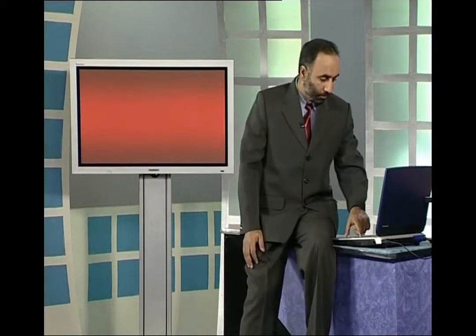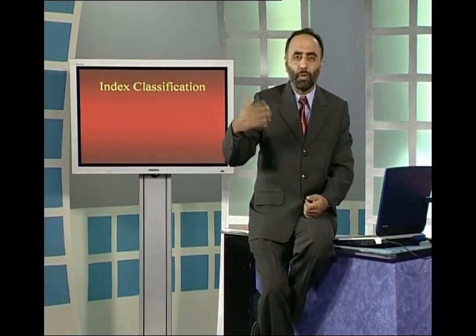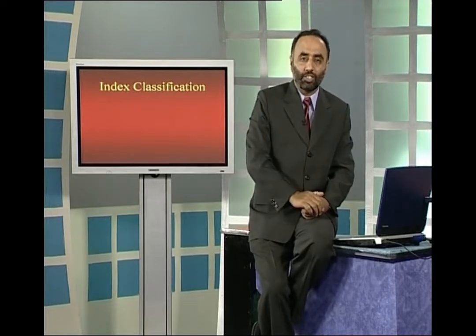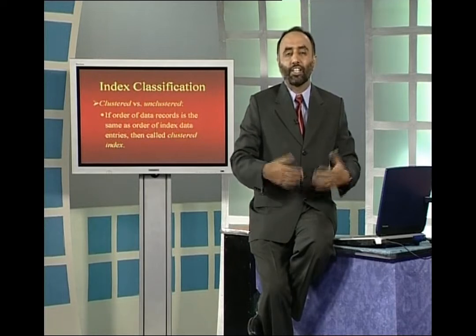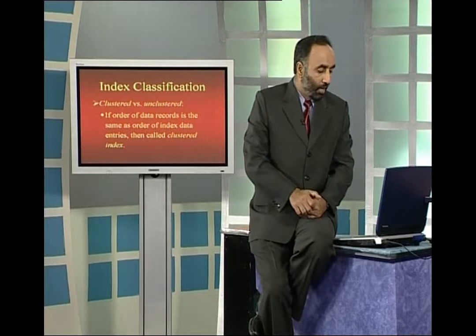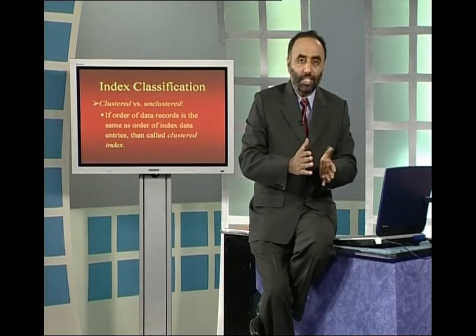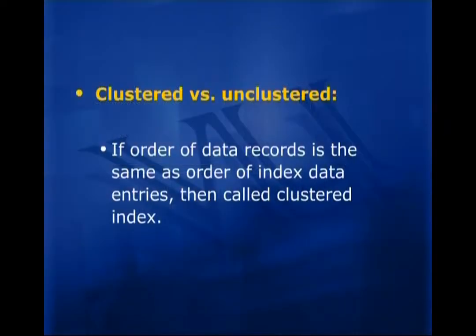That was a brief summary of the indexes discussion from the previous lectures. Today, we will start with index classification. One criterion for classification is the implementation approach we learned earlier. Another criterion is whether the index is clustered or unclustered. If records are physically stored in the table in the same order as the index, then that index is called a clustered index.